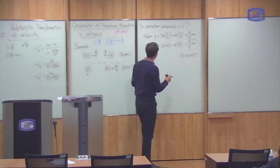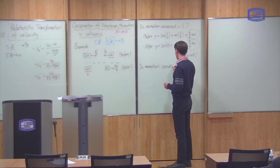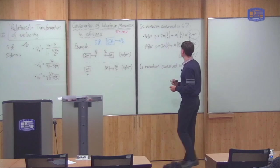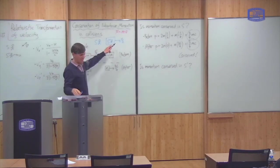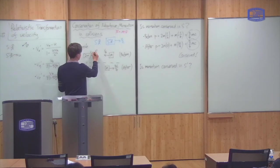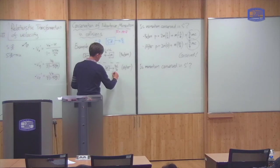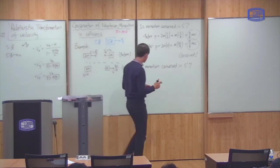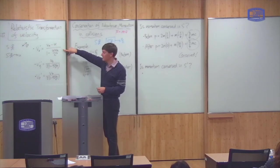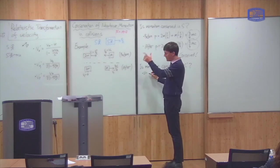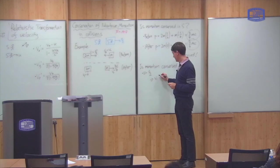Now we consider the same thing in S-prime. To do this, we need to calculate the velocities as seen by the S-prime observer. I'll call the initial velocities v1 and v2, and the final velocities v3 and v4. We use the relativistic velocity transformation formula. The relative speed between observers, u, is c/2.